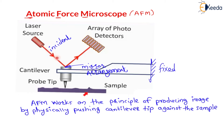This is a sample — a nanoparticle on nanoscale. Here this is a probe tip, and generally the radius of this probe tip is very very small. The radius of this probe tip, r, is equal to near about 10 Angstrom, which is very very small.